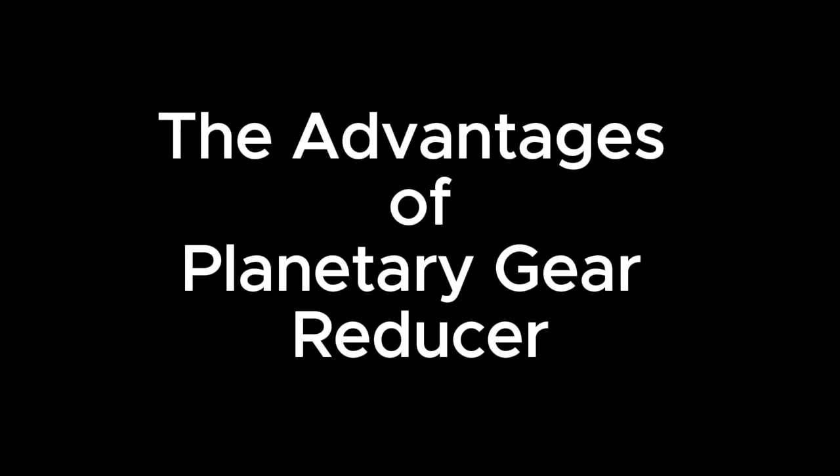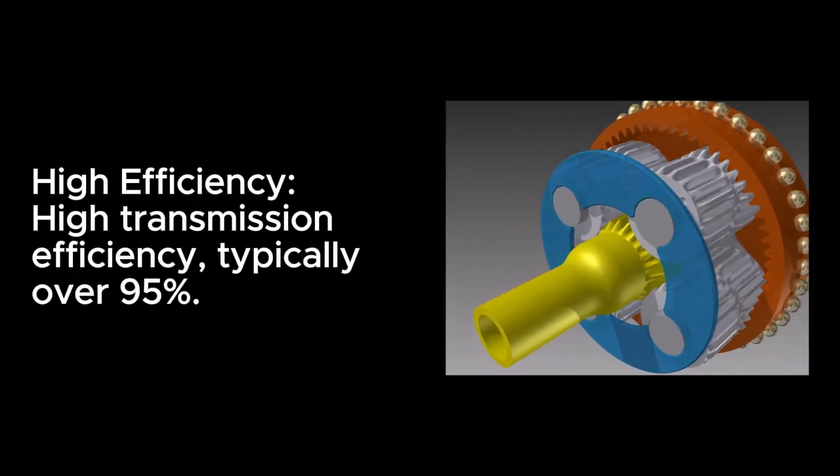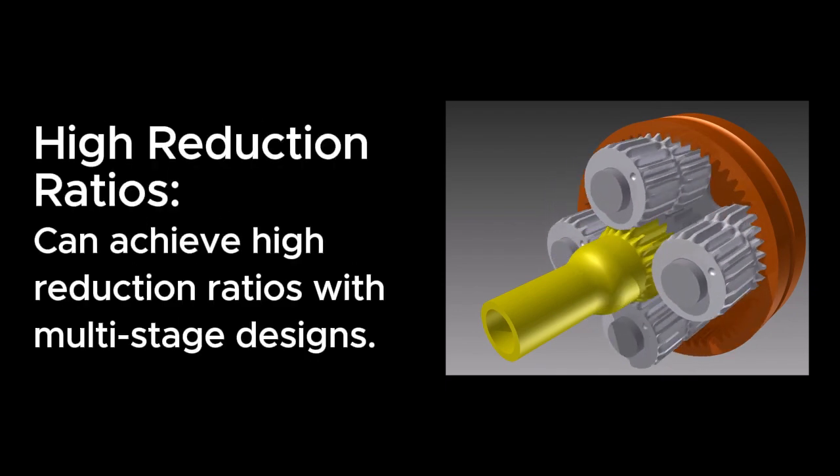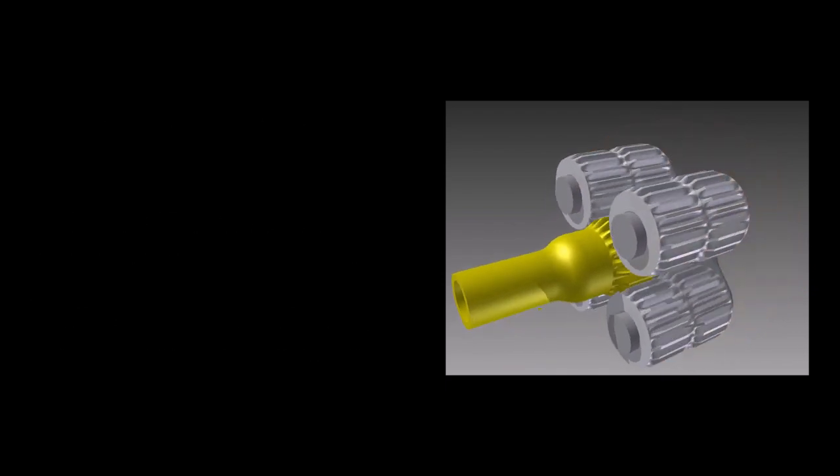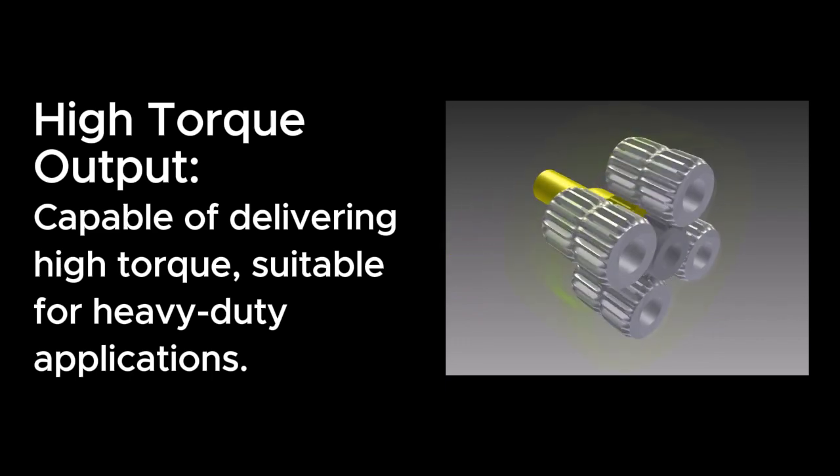The advantages of planetary gear reducer: High transmission efficiency, typically over 95%, can achieve high reduction ratios with multi-stage designs. Capable of delivering high torque, suitable for heavy-duty applications.